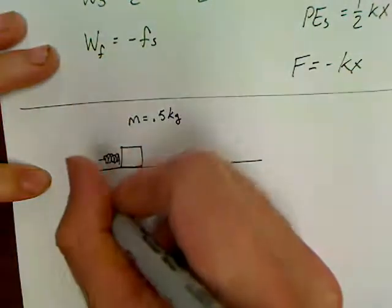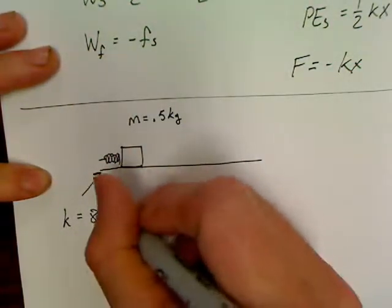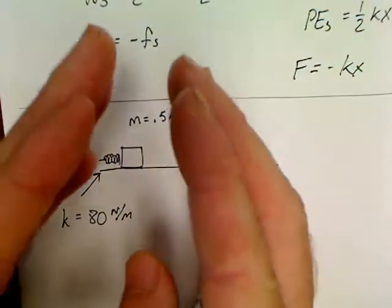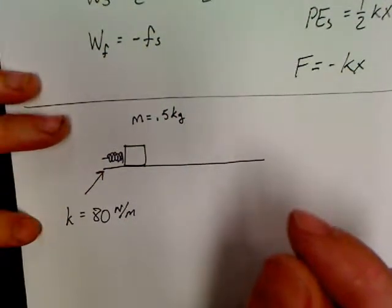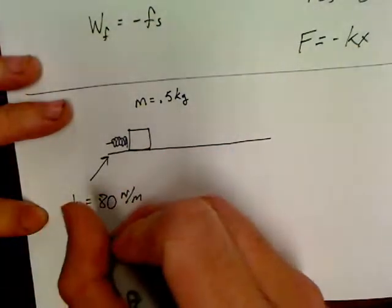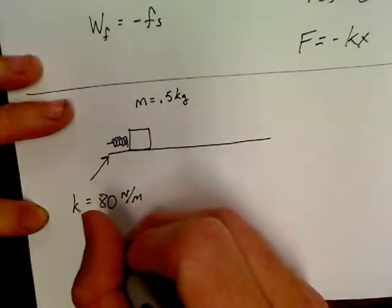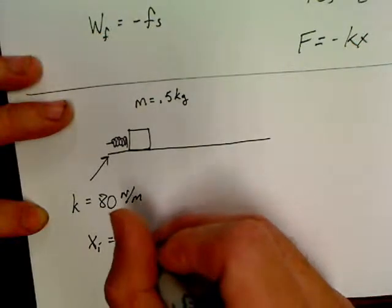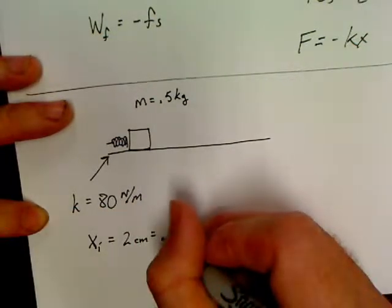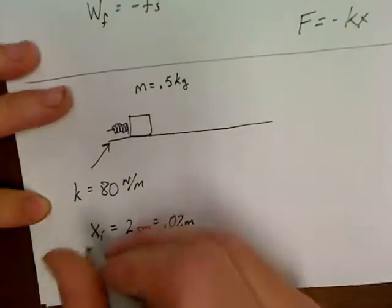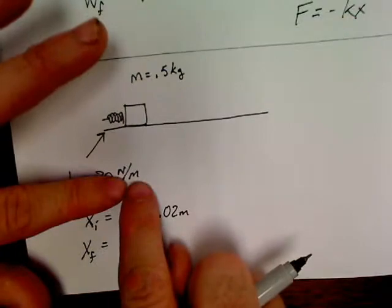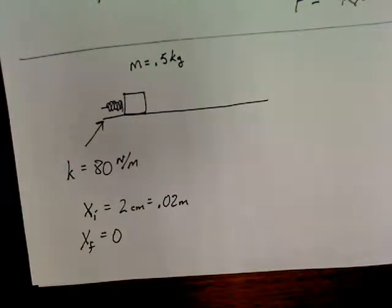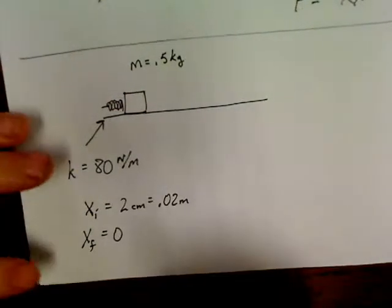Here's what's going on. You've got a flat surface and there's a spring on it. There's a block of wood compressed up against the spring. The block has a mass of 0.5 kg. The spring has a constant of 80 newton-meters, that means it takes 80 newtons of force to squish that spring one meter.